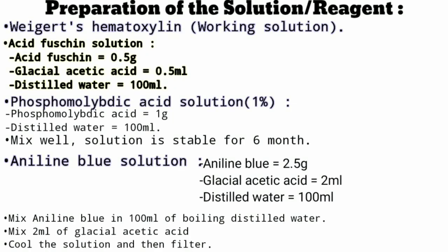For preparation of solutions or reagents in Masson's Trichrome, there are 4 solutions used. First, Weigert's hematoxylin, also called working solution. Second, acid fuchsin solution. Third, phosphomolybdic acid 1% solution. Last, aniline blue solution.